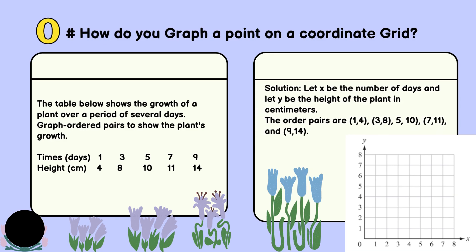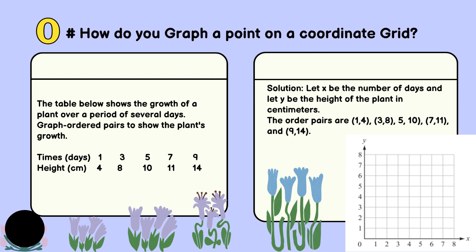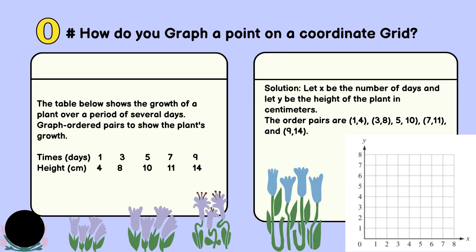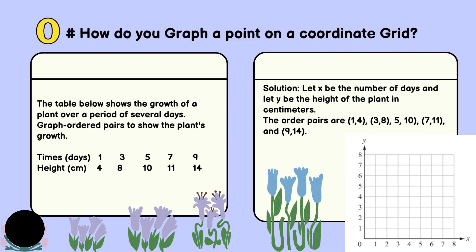So how do you graph a point on a coordinate grid? Here is one example to help you understand. The table below shows the growth of a plant over a period of several days and graph ordered pairs to show the plant's growth.